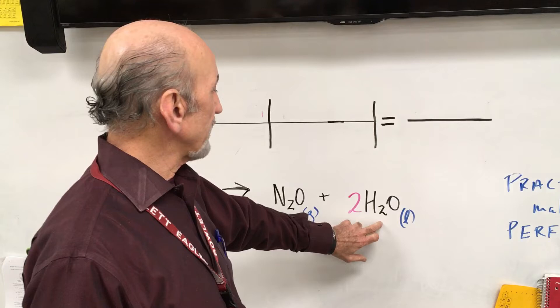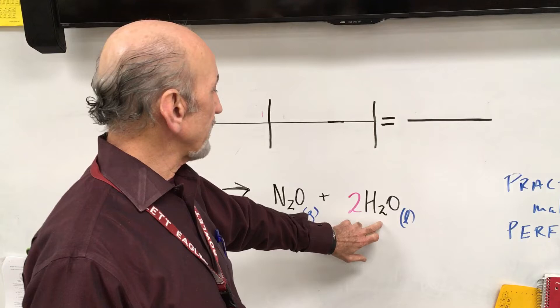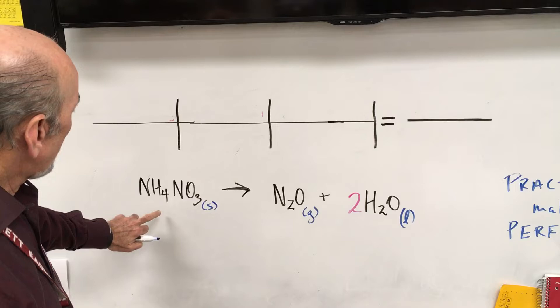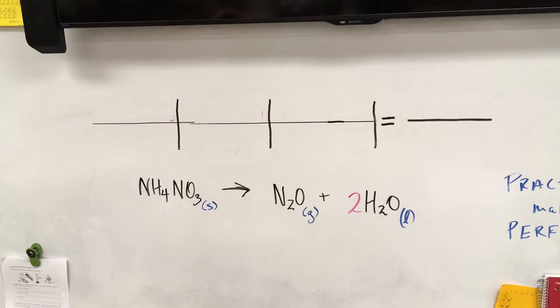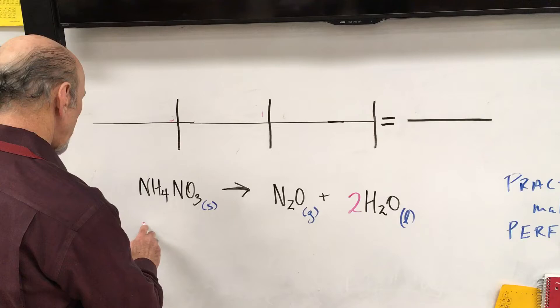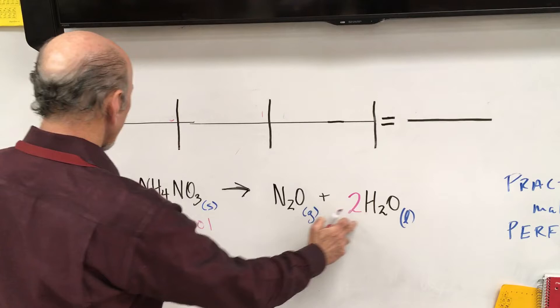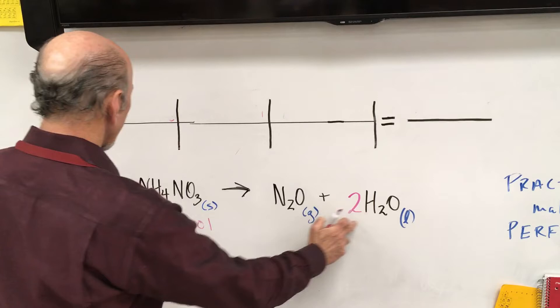And then you get liquid water. So the question is, how many moles of ammonium nitrate—let's stop right there. By the way, this is already balanced even though it doesn't look like it: two nitrogens, four hydrogens, three oxygens. One plus two makes three.